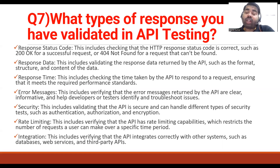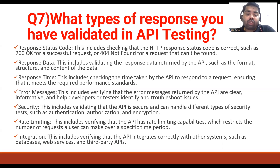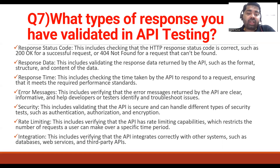We also validate the format, structure, or content of the response data. Response time is another validation — checking the time taken by the API to respond and ensuring it meets performance standards. Error codes are verified to ensure they are clear and informative to help developers or testers identify and troubleshoot issues. Security validation includes authentication, authorization, and encryption.